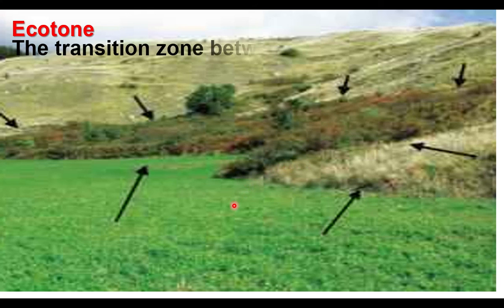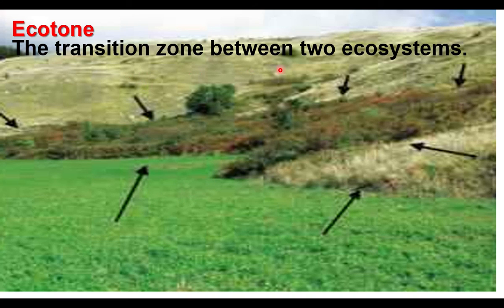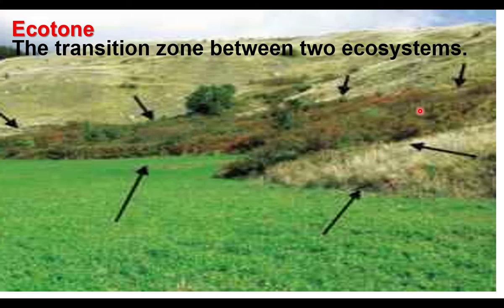Ecotone is the transition zone or area between two ecosystems. For example, between a grassland ecosystem and a mountain, the border area has a different microclimate. This area has different kinds of vegetation influenced by the climates of both ecosystems. The climatic conditions between the edges of two ecosystems are different, leading to different vegetation zones — this is called the edge effect.